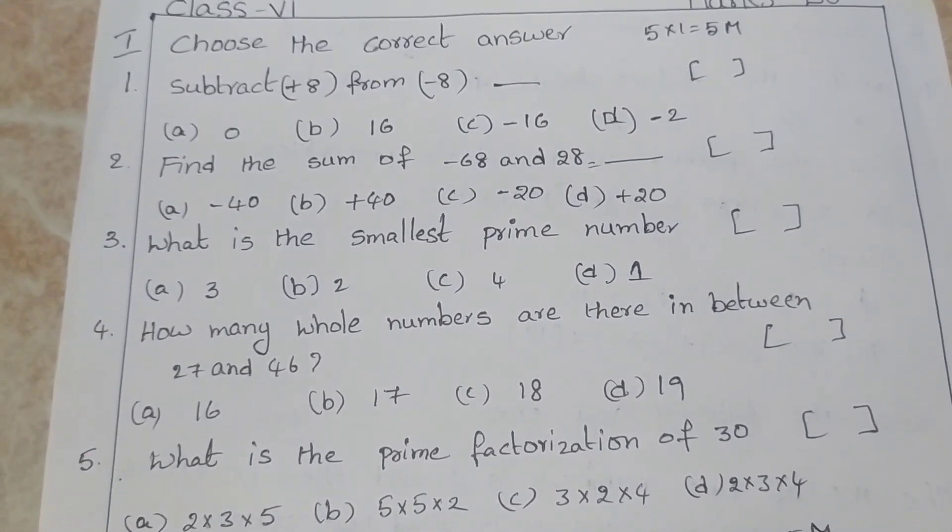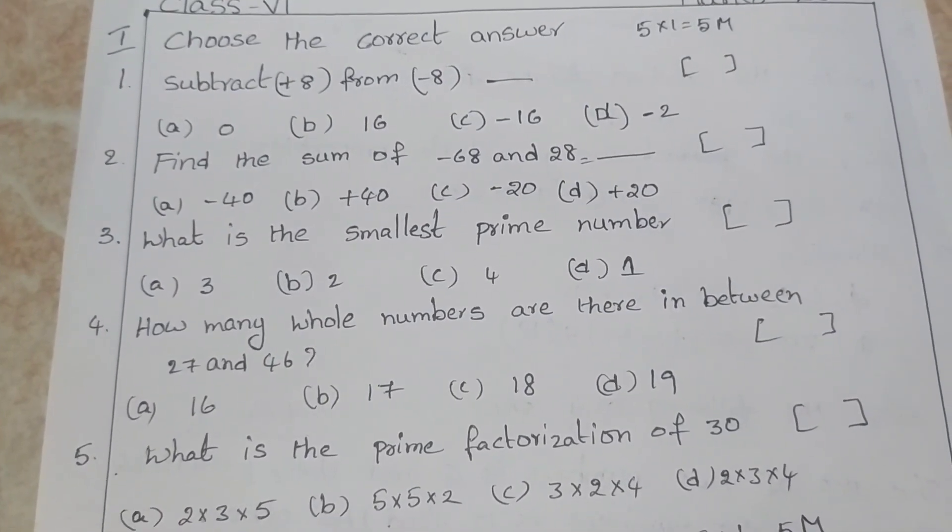What is the smallest prime number? 3, 2, 4, 1.